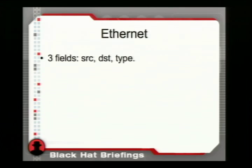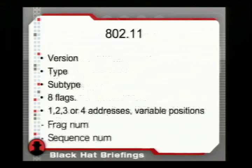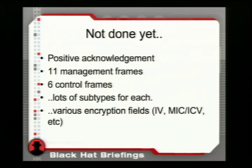Just for a quick comparison: Ethernet has three fields — source, destination, and type. I'm willing to bet if I put 14 bytes up there and said it's an Ethernet header, a lot of people could parse it. 802.11 has a version, type, subtype, eight flags, one to four addresses in different spots, a fragment number, a sequence number — that's just the header. After that: positive acknowledgement, 11 management frames, six control frames, lots of subtypes for each. And as soon as you turn on encryption, it adds more fields — initialization vectors, MICs, et cetera.